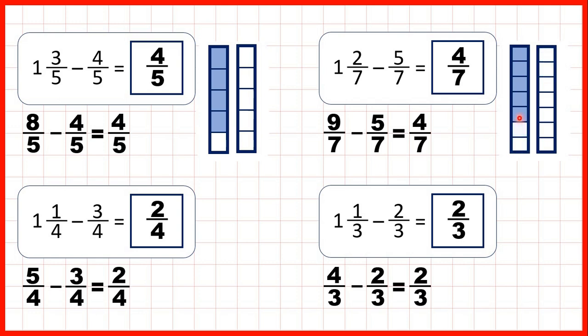And if we subtract 1, 2, 3, 4, 5 sevenths, you can see that we now have 4 sevenths left.